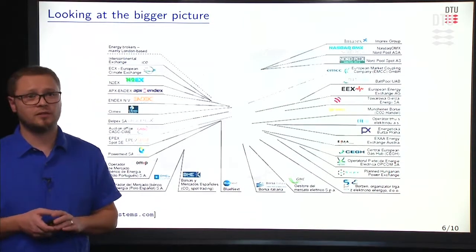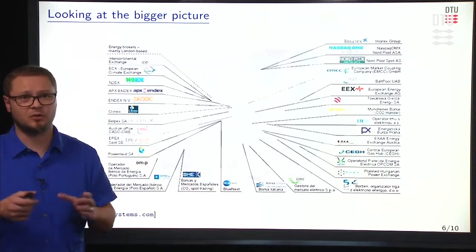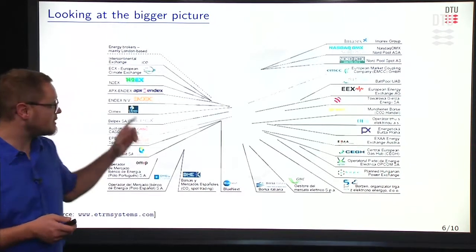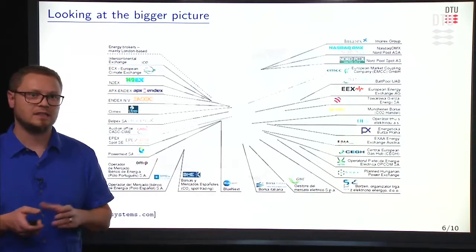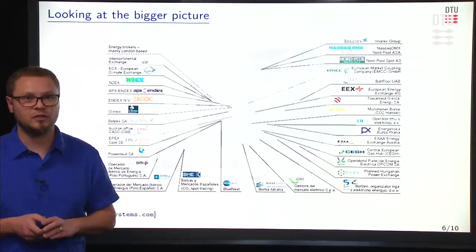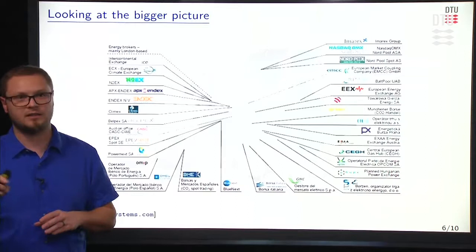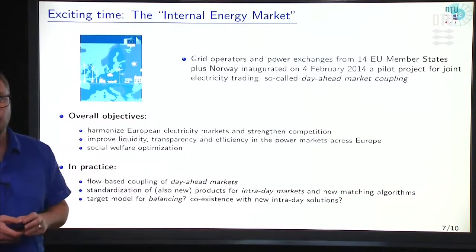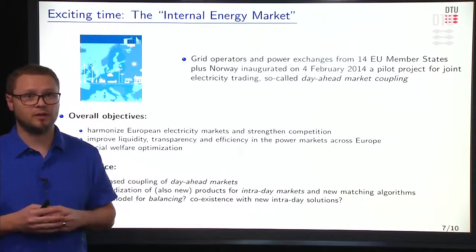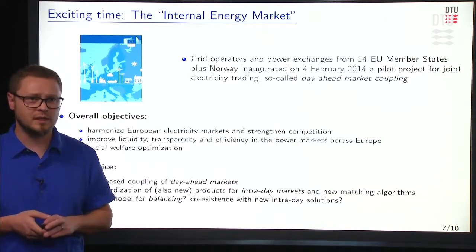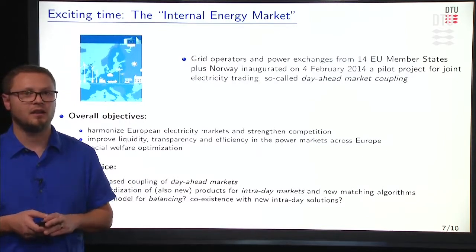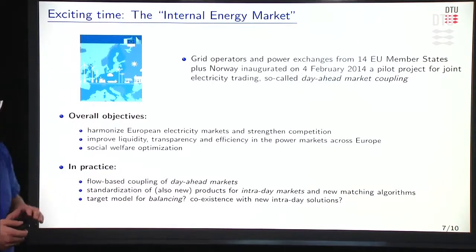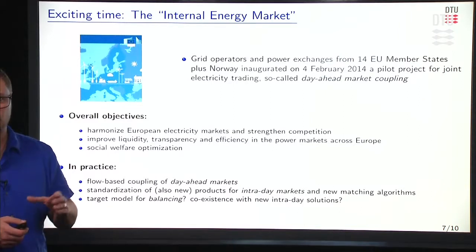Looking at the bigger picture, we don't have a single electricity market covering all of Europe. Originally, electricity markets appeared in various regions, and this is a long list of all those that developed. As mentioned previously, the frontiers between these markets are a bit blurry today, as some have merged or moved to other countries. For a few years now, market and grid operators have agreed to couple all these electricity markets to reach a European-wide electricity market and increase social welfare. The idea is to couple all day-ahead markets through a flow-based mechanism, which we will discuss in a further module.